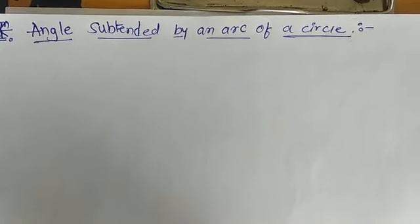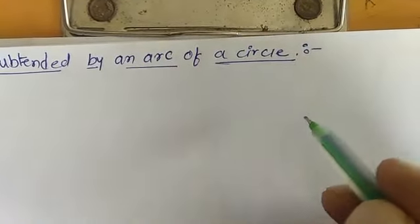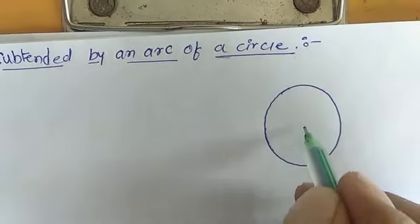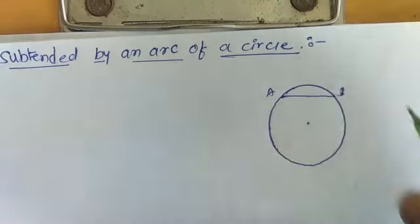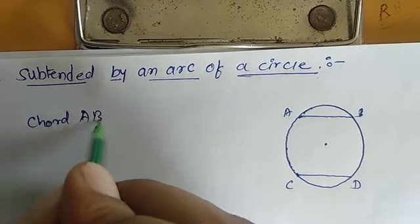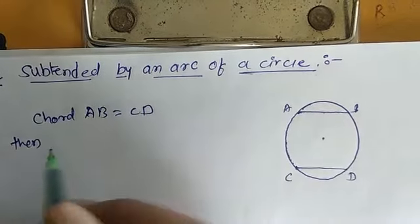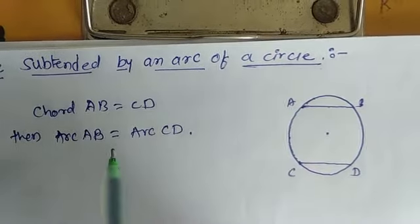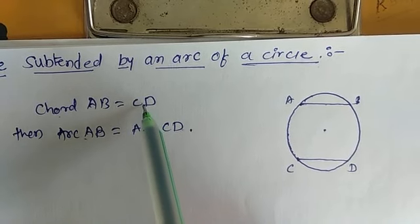Today we are going to study angles subtended by an arc of a circle. First, we see some properties related to chords and arcs. If you consider a circle with center O and two equal chords AB and CD, then arc AB is equal to arc CD. The converse is also true: if arc AB equals arc CD, then chord AB equals chord CD.